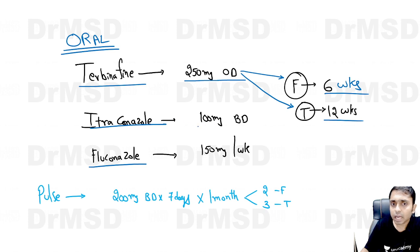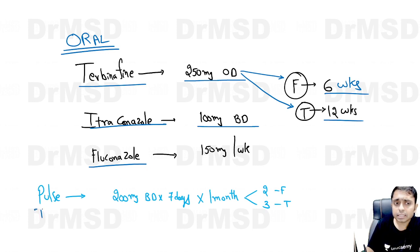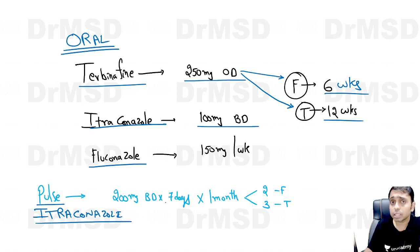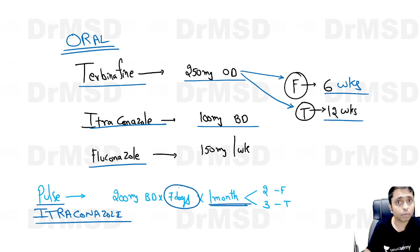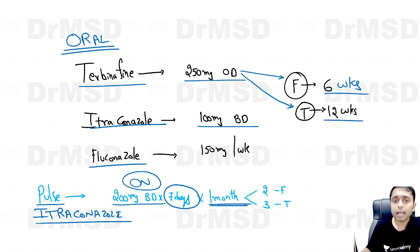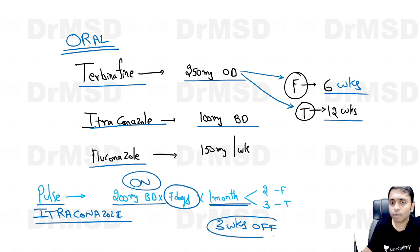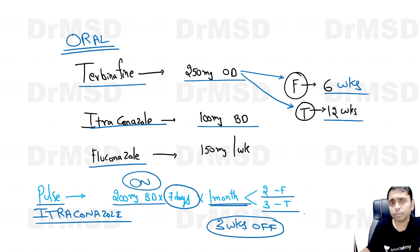Itraconazole is given as 100 mg BD — that is a total of 200 mg per day. Itraconazole has a special dosage formulation called pulse therapy. In pulse therapy, within a month of 4 weeks, one week is on drug at 200 mg BD (400 mg/day), and the remaining 3 weeks are off. This one week on and 3 weeks off is called one cycle. For fingernails, 2 cycles are given; for toenails, 3 cycles are given.